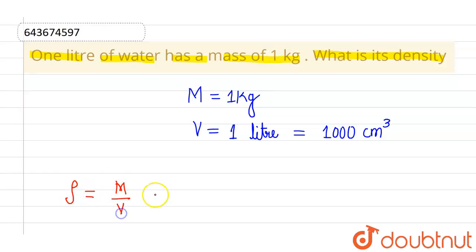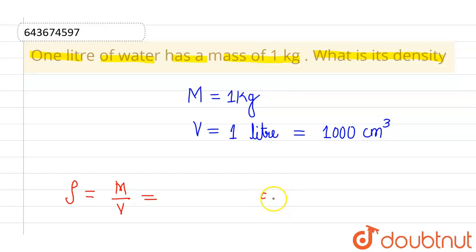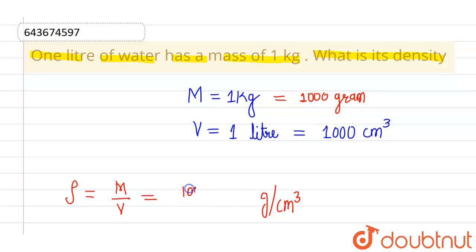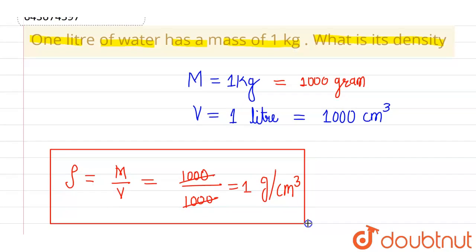Let me find its density in gram per centimeter cube. I know that one kg can be written as one thousand grams. So putting in the respective mass and volume, I get one thousand grams divided by one thousand centimeter cube, which comes out to be one gram per centimeter cube. So this is the density of water when it has one kg mass in one liter.